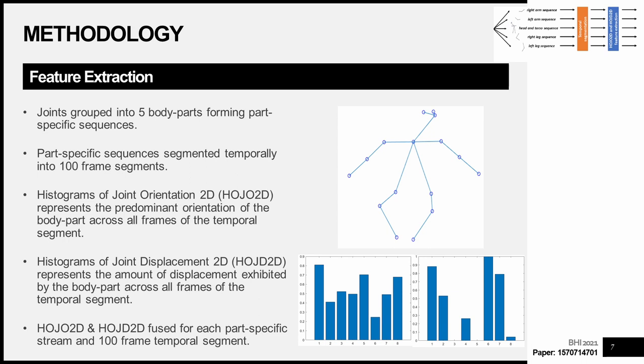In our framework we group the joints into five specific body parts forming part-specific sequences: the left arm, right arm, left leg, right leg, and head and torso. These part-specific sequences are then segmented temporally into 100-frame segments. We calculate the Histograms of Joint Orientation (HOJO2D), which represents the predominant orientation of the body part across all frames of the temporal segment, and the Histograms of Joint Displacement (HOJD2D), representing the amount of displacement exhibited by the body part. Each feature is represented by an 8-bin histogram of normalized data. Finally, we fuse each feature together for each part-specific stream and each 100-frame temporal segment, so each video is represented by multiple histogram-based motion features for classification.